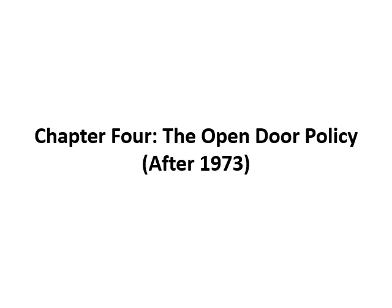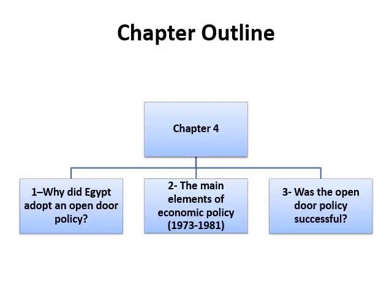Today I am going to discuss chapter 4 on the economic evolution. It is about the open door policy for the period after 1973. In this chapter we will discuss three main points: why did Egypt adopt an open door policy, the main elements of that policy which started in 1973 and ended in 1981, and the impacts and consequences of that policy — to what extent the open door policy was successful.